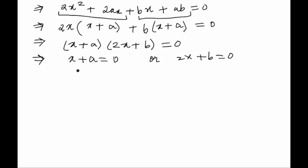In the first case we would get that x is equals to minus a, and in the second case we would get 2x is equals to minus b or x is equals to minus b by 2. So these are the two values of x which satisfy the given equation.